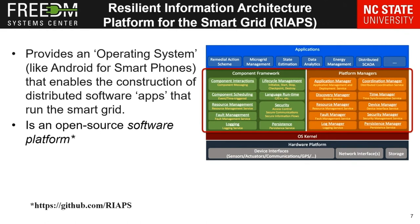REAPS aims at providing an operating system that enables the construction of distributed software apps that run the smart grid. REAPS for smart grid is like Android for smartphones — we know we can have all kinds of apps running on Android. On REAPS, we also have all kinds of apps, but those apps are for smart grid control. REAPS is an open source software platform, so you can go to our GitHub repository and download the platform for free.